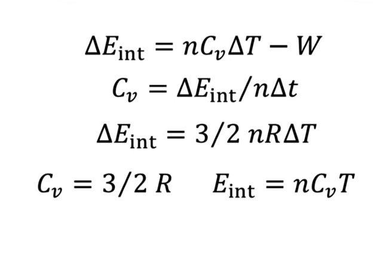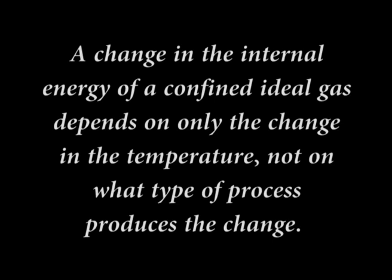This equation applies not only to an ideal monoatomic gas but also to diatomic and polyatomic ideal gases, provided the appropriate value of Cv is used. When a confined ideal gas undergoes temperature change delta T, the resulting change in its internal energy is delta E_internal = n·Cv·delta T. This tells us that a change in the internal energy depends only on the change in temperature, not on what type of process produces the change.